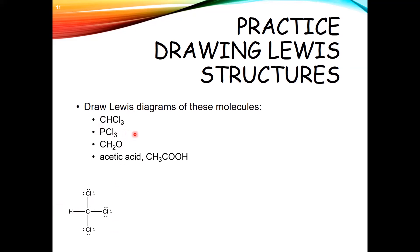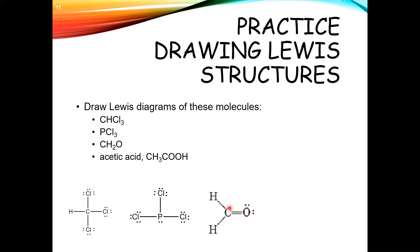For PCl3: phosphorus has five valence electrons, right below nitrogen on the periodic table. It has three unpaired electrons and two paired electrons, so it forms three bonds. Chlorine forms one bond. You should get a structure with the center phosphorus having a lone pair on it. CH2O is a little more complicated because we're introducing a double bond. Carbon is the central atom, still singly bonded to each hydrogen, but now we need a double bond between carbon and oxygen. Oxygen will then need its two lone pairs to finish its octet.